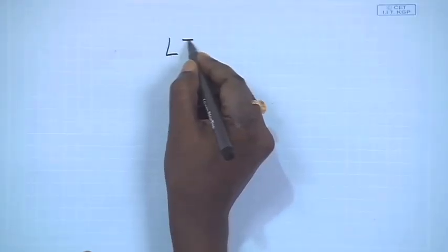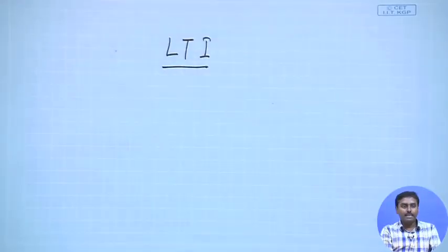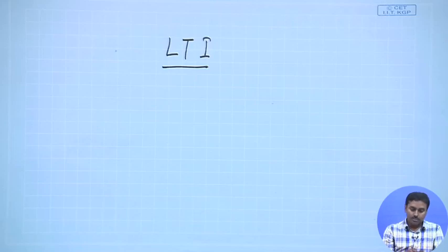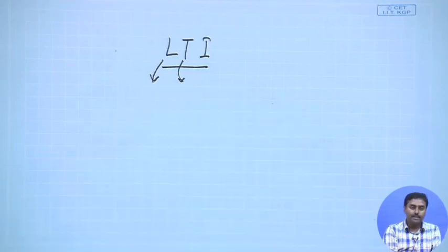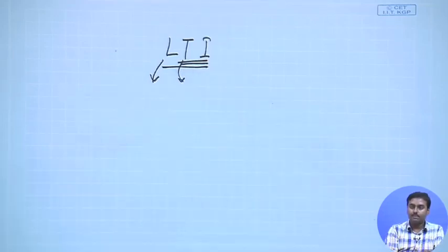Today we will discuss the LTI - linear time invariant system. There are two important terms: linear and time invariant. We will characterize these two things separately. Let us start with what we mean by linearity in a circuit.